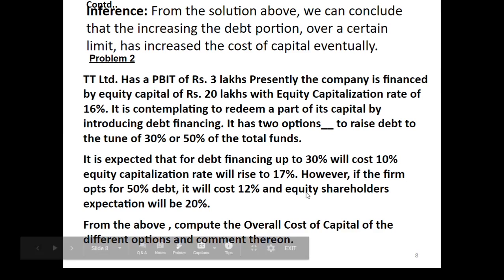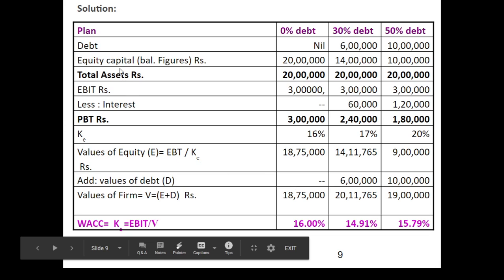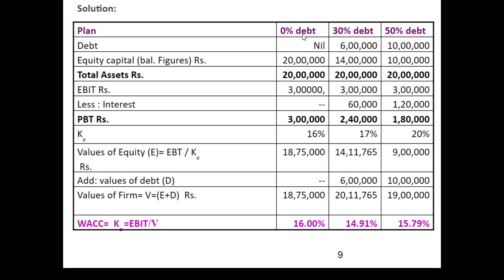Coming to the solution, there are three plans: 0% debt (Case 1), 30% debt (Case 2), and 50% debt (Case 3). In Case 1 there is nil debt. In Case 2, 30% of 20 lakhs means 6 lakhs is debt. In Case 3, 50% of 20 lakhs means 10 lakhs is debt. Equity capital is 20 lakhs in Case 1, 14 lakhs in Case 2, and 10 lakhs in Case 3. Total capital is 20 lakhs in all three cases. EBIT is given as 3 lakhs in all cases.